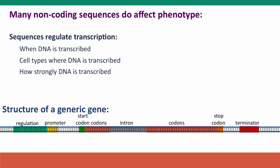There are a lot of different non-coding sequences that do affect phenotype. They're only a small component of the genome, but they're vitally important. The first class is sequences that affect transcription — when the DNA is transcribed, what cell types the gene is transcribed in, and how strongly it's transcribed. For instance, the sequence of the promoter determines how strongly RNA polymerase will bind and initiate transcription. Mutations that affect a promoter will change that. There are many regulatory sequences, mostly in front of genes, and changes to any of these can affect when, in which cell types, or how strongly the gene is transcribed.